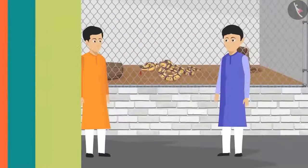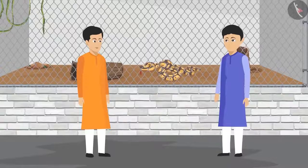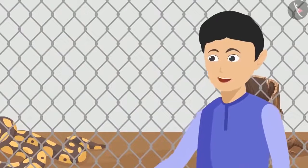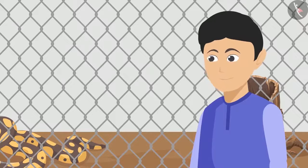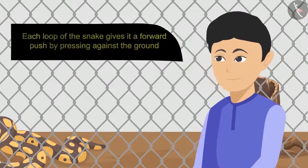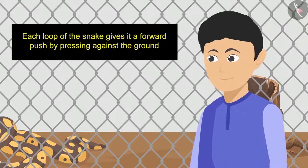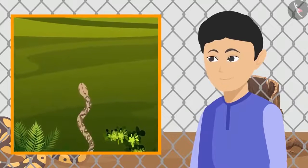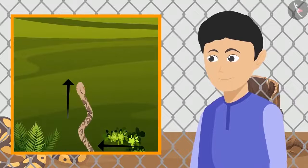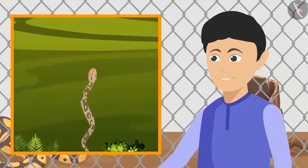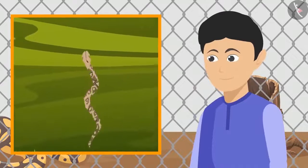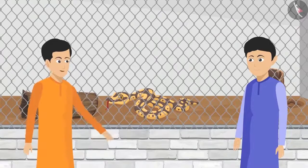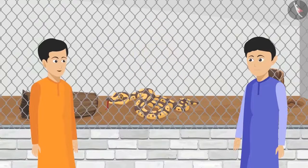At the zoo, they first went near the snake yard. They observed a python slowly sliding forward. Sikandar explained that snakes curve their bodies in loops like the letter S — each loop gives a forward push by pressing against the ground. A push from one side turns the snake left and a push from the other side turns it right, keeping movement balanced so it slides forward easily.